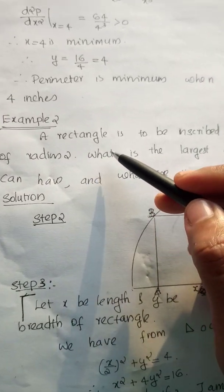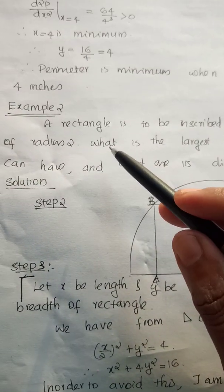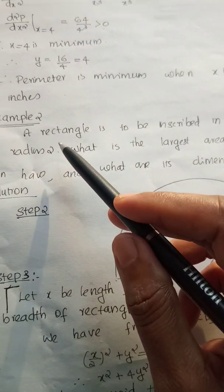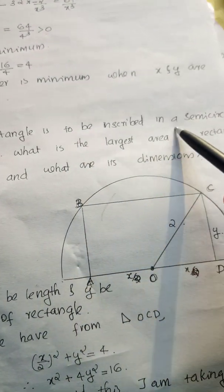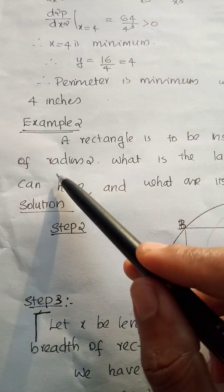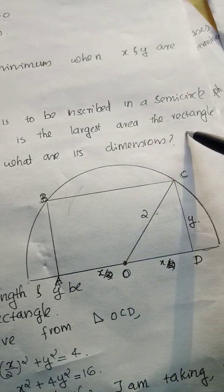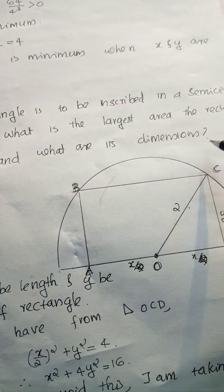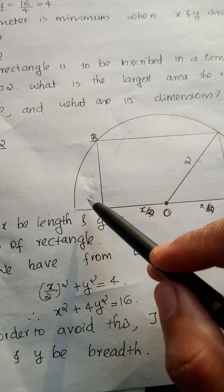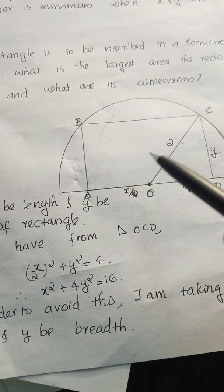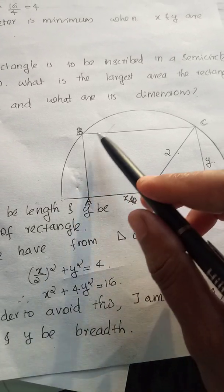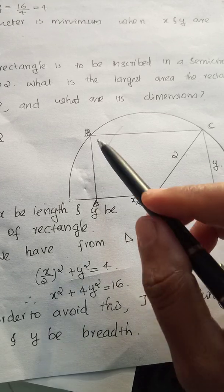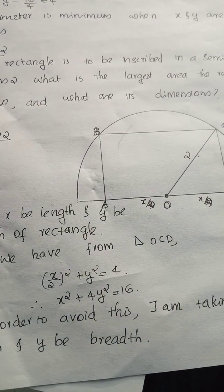Next we are going to the next example. The question is: a rectangle is to be inscribed in a semicircle of radius 2. What is the largest area the rectangle can have and what are its dimensions? Step 1 is the description and drawing of the problem — we draw the semicircle and inscribe the rectangle.